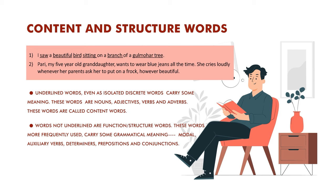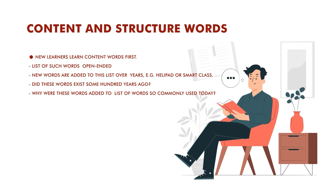Function words are usually modals, auxiliary verbs, determiners, prepositions, or conjunctions like 'and.' Content words like 'beautiful' or 'bird' carry a lot of meaning — there are several types of birds, so many meanings are associated with these words. This group of content words keeps increasing as more and more contexts arrive in the language. New learners learn content words first, and such lists of words are open-ended; new words are added to this list over the years.